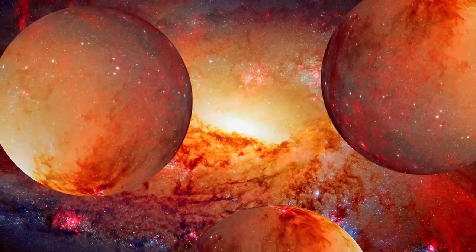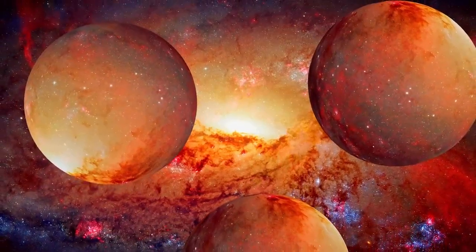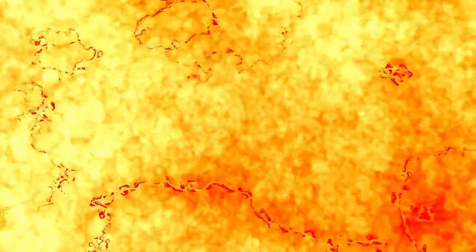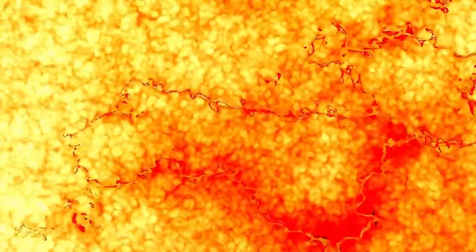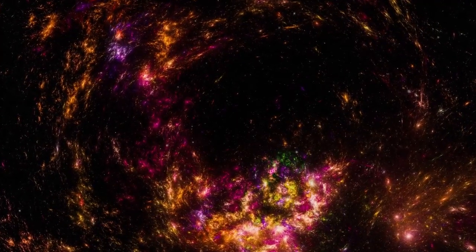One of Webb's most incredible achievements came when it recreated what once took the Hubble telescope 11 days to observe in under 24 hours. But what it revealed wasn't just breathtaking, it was deeply unsettling. In its ultra-deep field images, Webb found galaxies so old, so massive and well-formed that they should not exist.